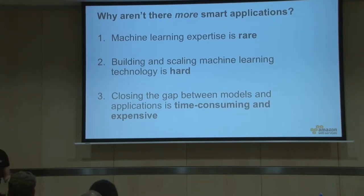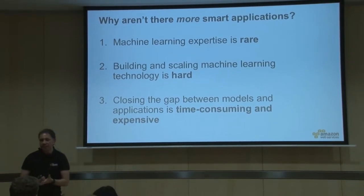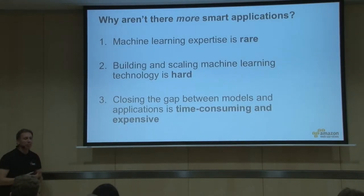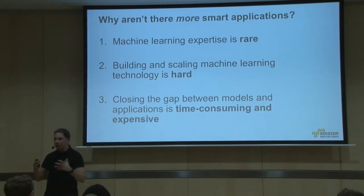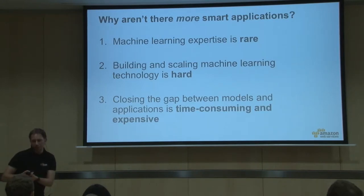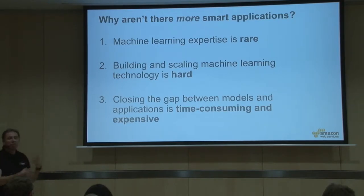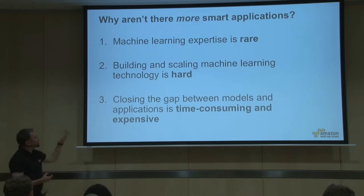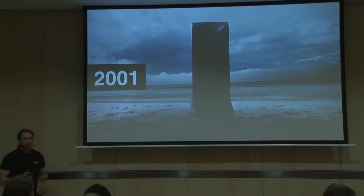So what is the problem? Why don't we see a lot of machine learning-enabled applications? Because machine learning expertise is rare — you usually need a data scientist with a PhD. And even if you have someone who knows everything about algorithms, when you implement those algorithms you need to scale the implementation. That's not a data scientist's skill — it's a computer scientist's. Closing this gap is not easy, and we learned that by ourselves.